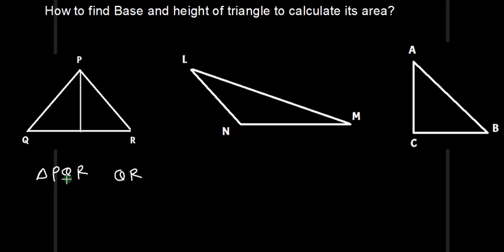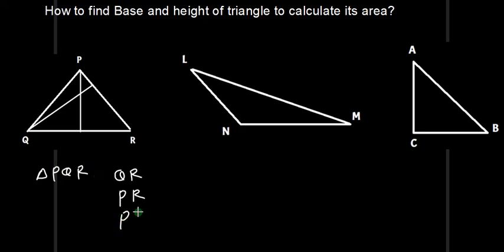If someone has taken PR as the base — that is also correct. If PR is the base, then a perpendicular drawn from Q on PR will be the height of the triangle. Similarly, if PQ is taken as the base, then a perpendicular drawn from R will be the height of the triangle.